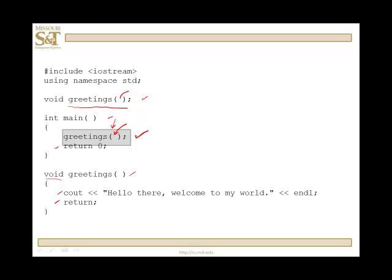During execution, we start with main. We hit greetings — control passes to the function. No values of arguments are sent to any parameters. We execute the cout statement, hit the return, and control passes back up. We continue by executing return zero on main, and that ends the program.